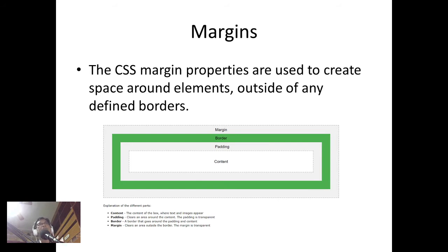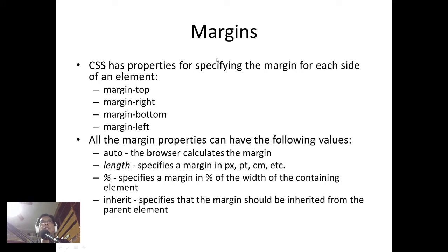CSS margin properties are used to create space around elements, outside of any defined borders. In the box model, outside the content is the padding, and outside the border is the margin. CSS has properties for specifying the margin for each side of an element: margin-top, margin-right, margin-bottom, and margin-left.